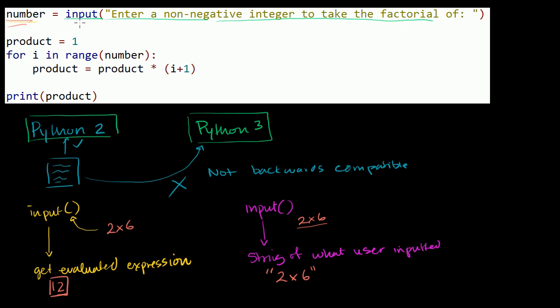So if you want that original function to work in Python 3, what you have to do is instead of just calling input like this, you have to write eval, and then write input.